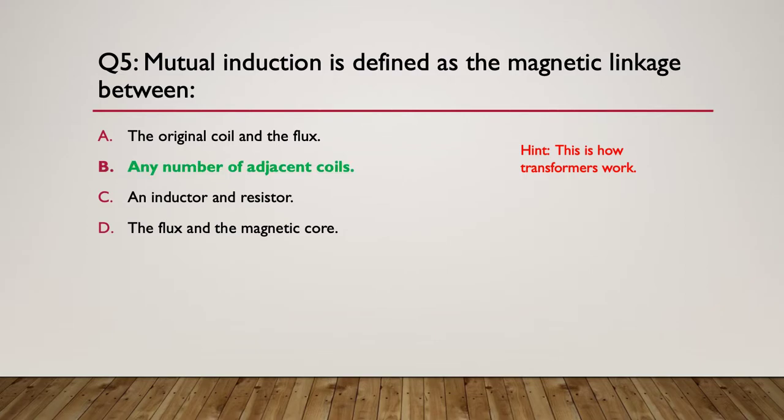The answer is any number of adjacent coils. In a transformer it's often one adjacent coil, but it doesn't have to be - it can be multiple adjacent coils. So any number of adjacent coils could have a voltage induced in it if the magnetic field from the primary one cuts through the secondary coil.